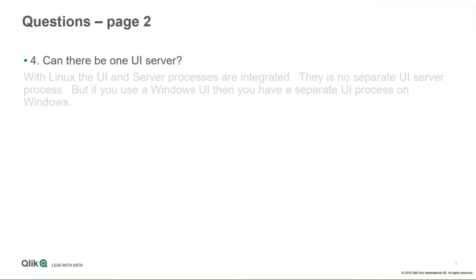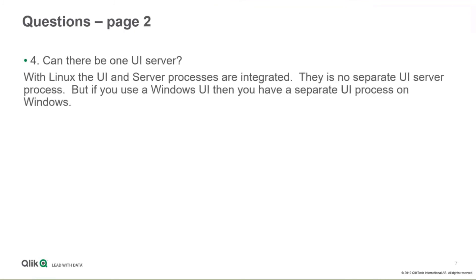Can there be one UI server? On Linux, the UI and server processes are integrated, so there's no separate UI server. If you use a Windows UI, you would have a separate UI process on Windows. Even when you have a Windows UI, you can also directly connect to the Linux UI, but that is usually not done. To do so, you would need the password for an account that's allowed. If you use the Windows UI and haven't connected Linux to PAM, there's only the one admin user, so if you don't share that password, you can only use the Windows UI.